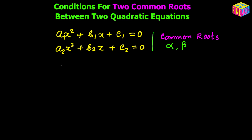Suppose we have two quadratic equations given to us: a₁x² + b₁x + c₁ = 0 and the second one is a₂x² + b₂x + c₂ = 0. We have been told that they have both roots common. That means if the roots are α and β, the first equation will also have α and β as roots, and the second equation also has α and β as the roots.